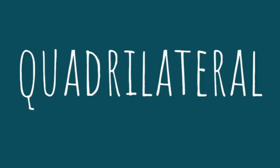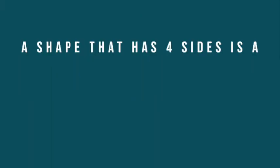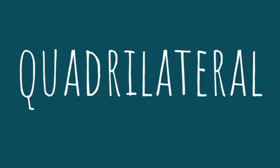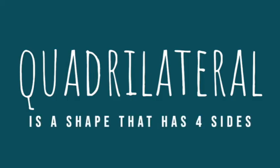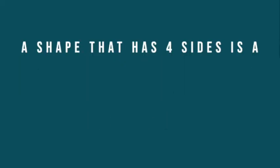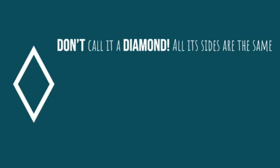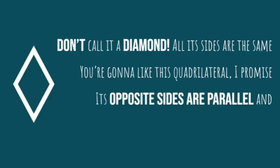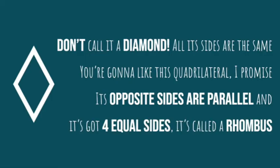Quadrilateral! A shape that has four sides, it's a quadrilateral. Don't call it a diamond — all its sides are the same. You're gonna like this quadrilateral, I promise. Its opposite sides are parallel and it has four equal sides. It's called a rhombus.